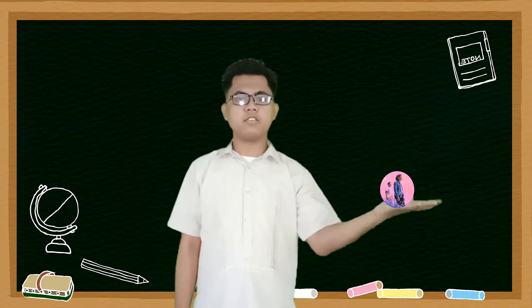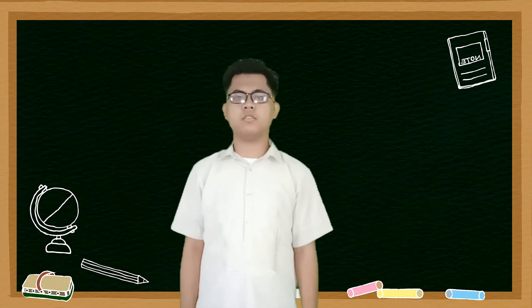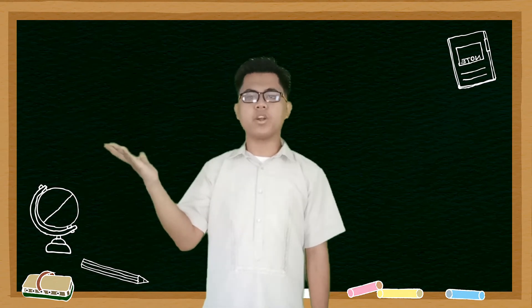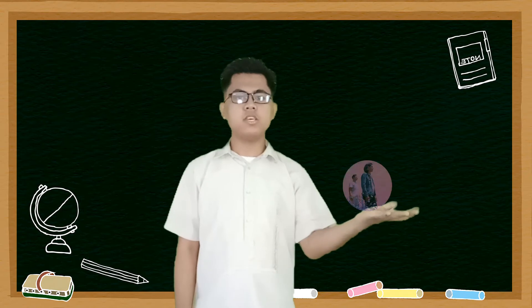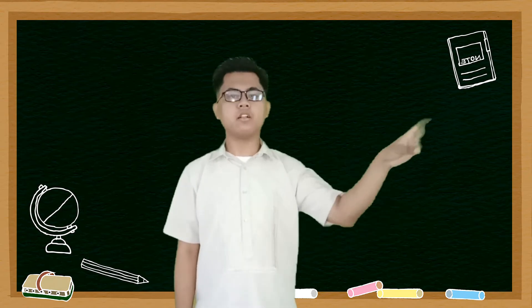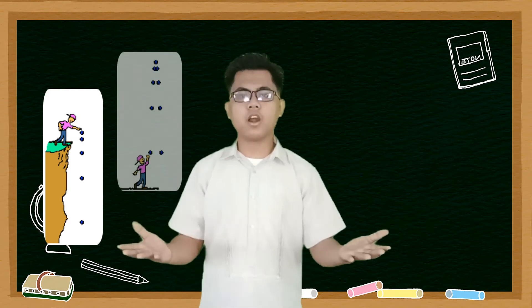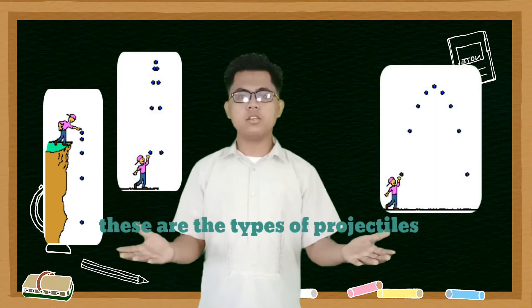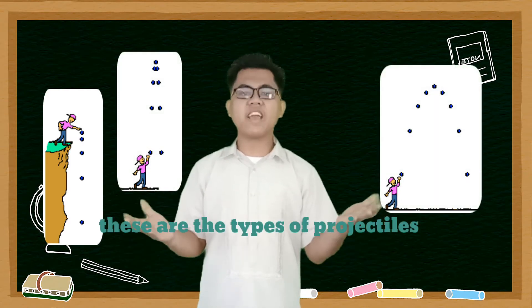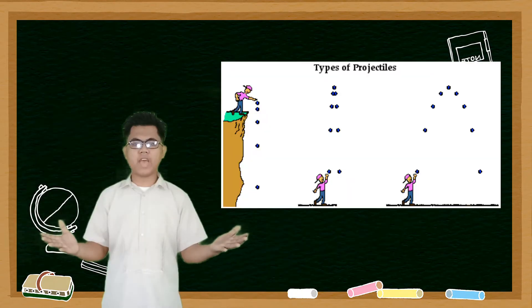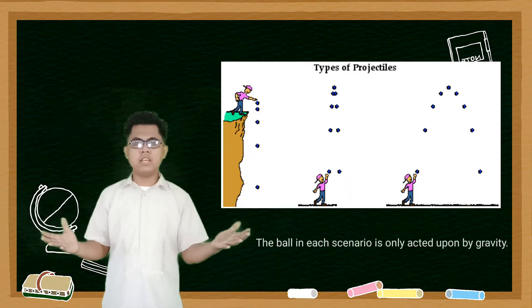Scenario number one, a ball from rest is being dropped. Second scenario, a ball is thrown vertically upright. Third scenario, a ball is thrown at an angle relative to the ground. In these scenarios, the ball is considered a projectile. The only force acting on the ball is gravity.